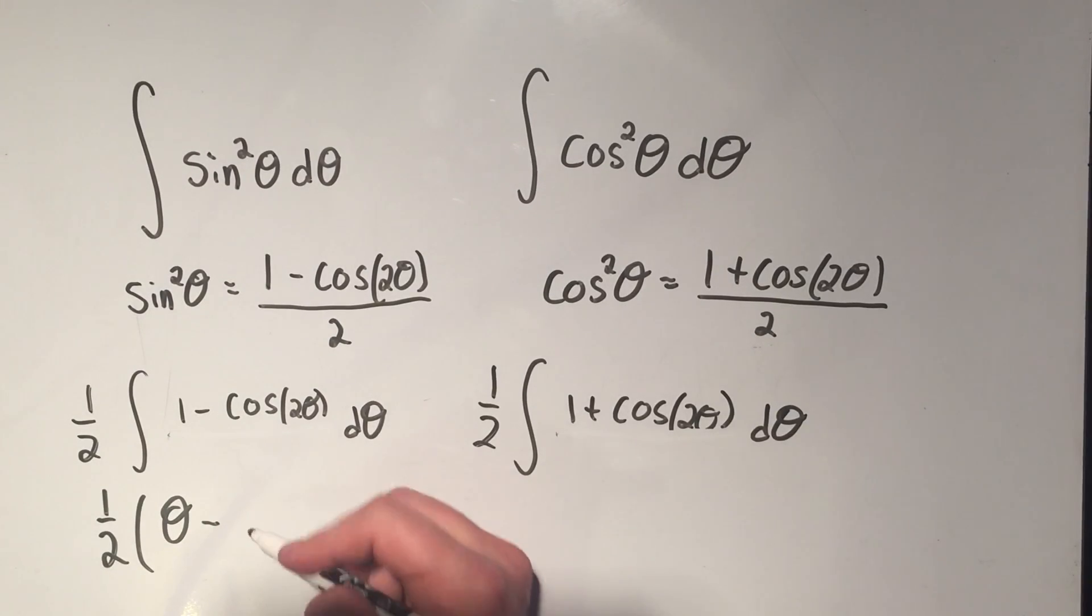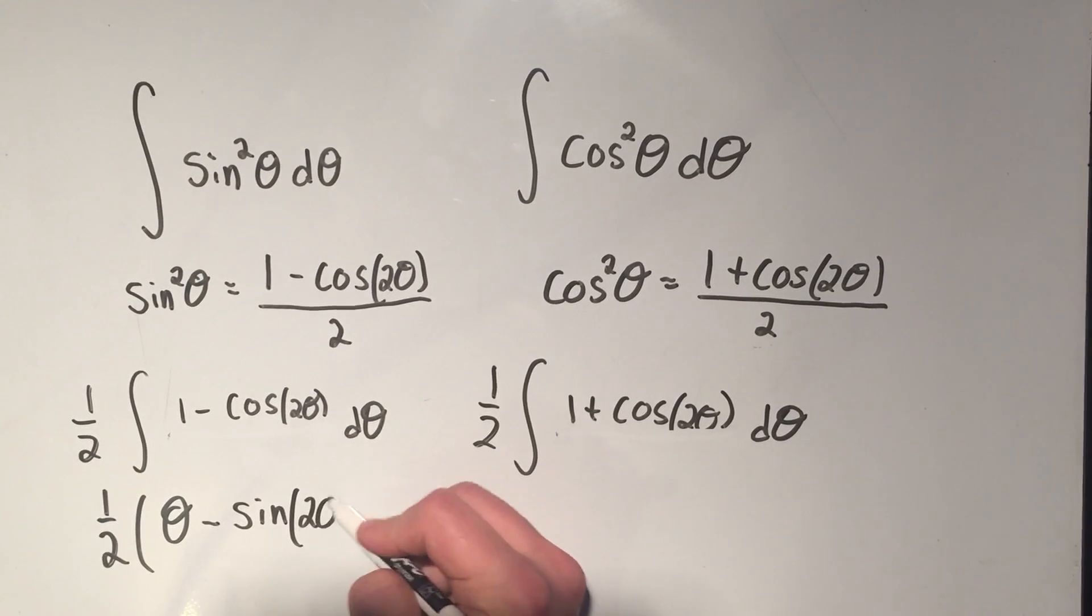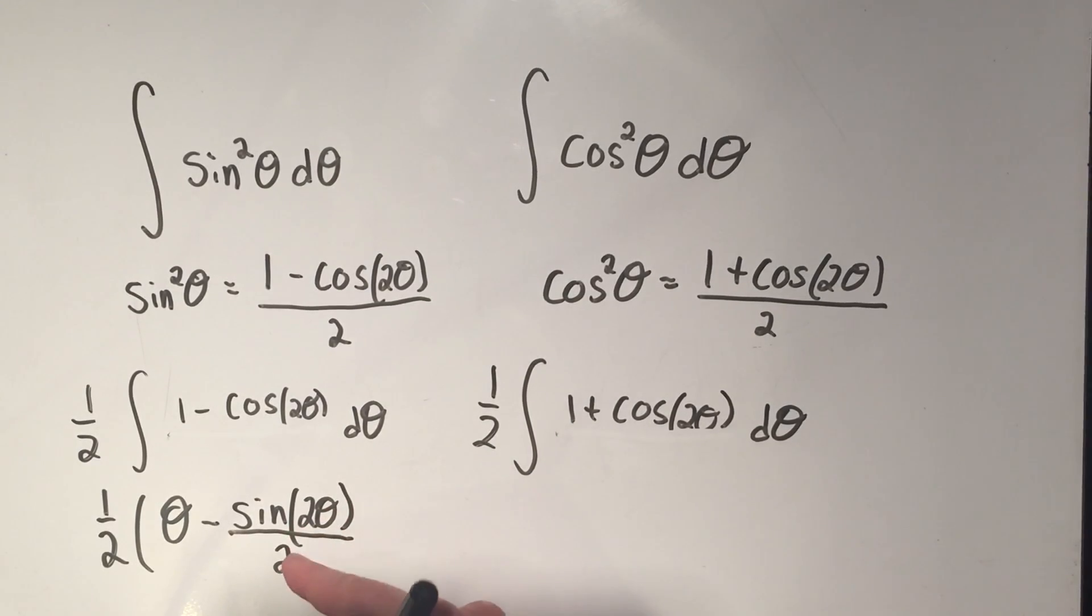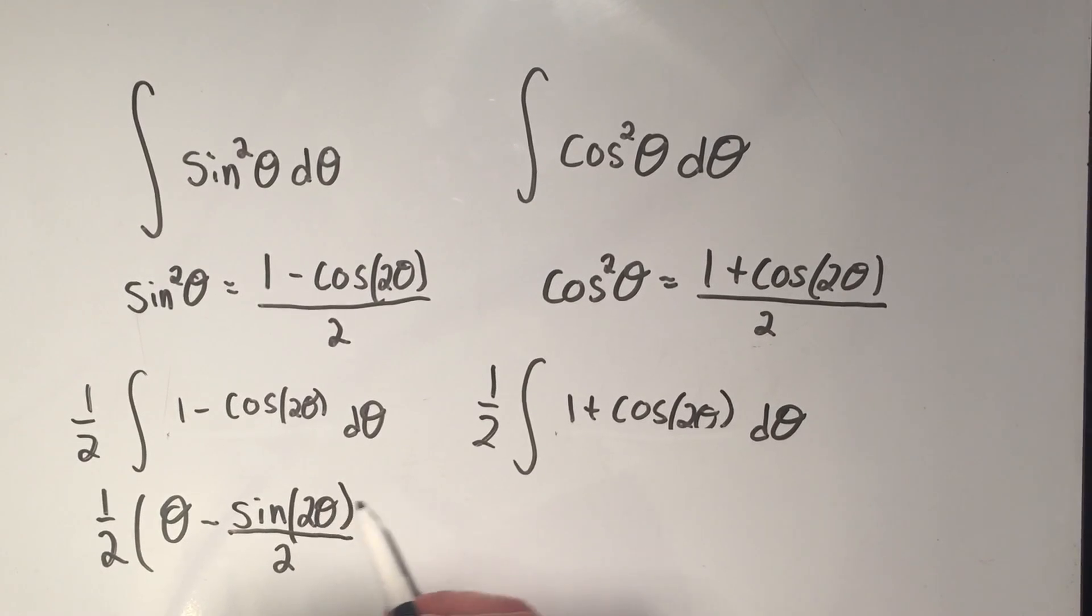So the antiderivative of 1 with respect to theta would be theta minus. The antiderivative of cosine of 2 theta, that would be sine of 2 theta. But by the chain rule, I would have needed to divide by 2 because of this factor of 2 on the inside.